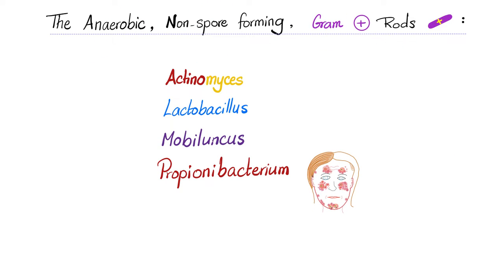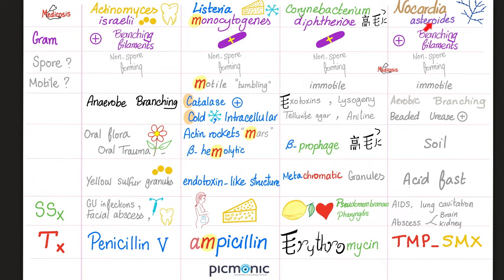What are the anaerobic, non-spore-forming, gram-positive rods? Actinomyces is the most common, followed by Lactobacillus, Mobiluncus, and Propionibacterium — the most famous of which is Propionibacterium acnes, which causes acne. The most famous species of Actinomyces is Actinomyces israelii, but other species do indeed exist.